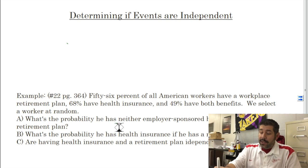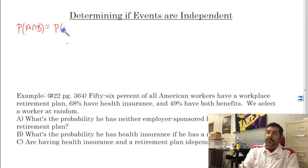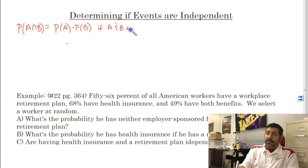Let's go back and think about the multiplication rule. The multiplication rule, if you remember, is that P of A and B is equal to the probability of A times the probability of B if A and B are independent.